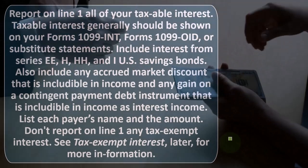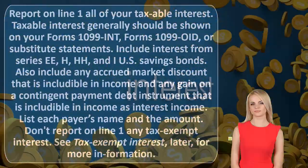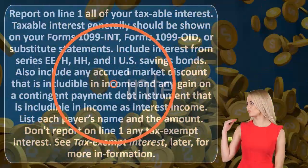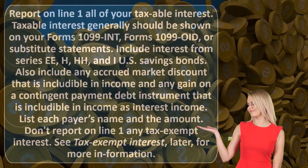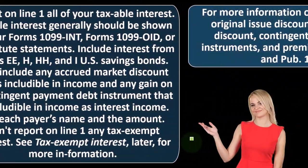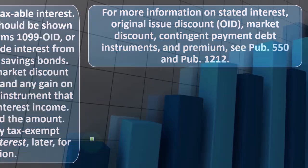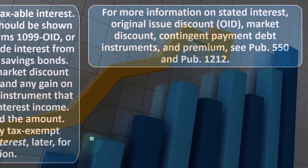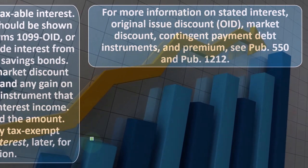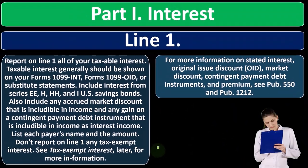Do not report any tax-exempt interest on line 1, since this is the taxable line item. For more information on stated interest, original issue discount (OID), market discount, contingent payment debt instruments, and premium, see Publication 550 and Publication 1212.